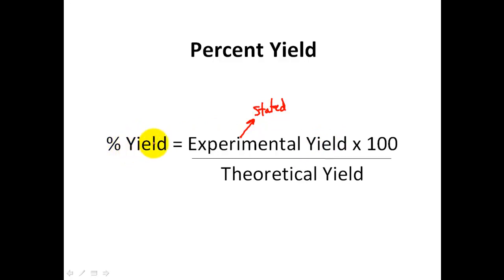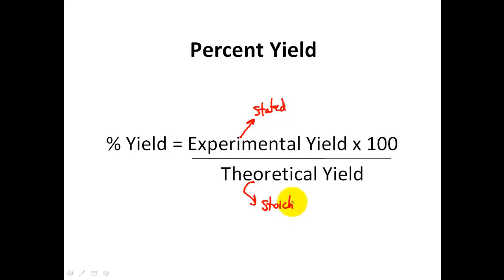When I use the term percent yield, really what I'm trying to say is percent made — what percent did I make in my experiment compared to what I should have made in theory? Theoretical yield is a result of a stoichiometry problem, so you're going to need some stoichiometry in order to solve for the theoretical yield. It will never actually be expressed for you; only the experimental yield will be given.